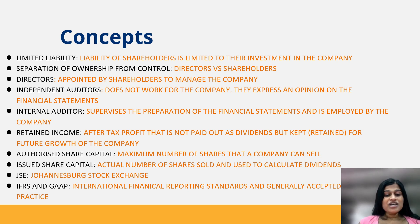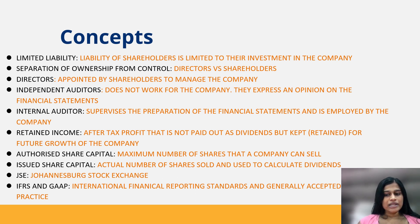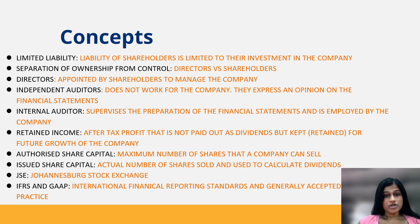Retained income is after-tax profit that is not paid out as dividends to shareholders but is instead kept or retained for future growth of the company. Authorized share capital represents the maximum number of shares that a company can sell, as stated in the MOI. Issued share capital is the actual number of shares sold to shareholders and is used to calculate dividends — it will never exceed the authorized share capital. The JSE is the Johannesburg Stock Exchange where public companies are listed and their shares can be traded.